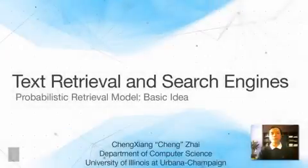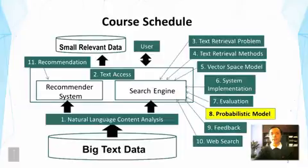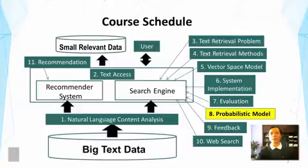This lecture is about the probabilistic retrieval model. We're going to continue the discussion of text retrieval methods and look at a very different way to design ranking functions than the vector space model that we discussed before.